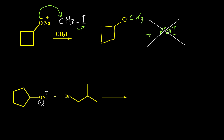We normally consider only the organic part of the reaction. In the second example, we have O-negative with sodium positive, and the carbon is primary, so we can have an SN2 reaction. The oxygen attacks this carbon, expelling bromine, and in our product, oxygen is attached to the alkyl group.